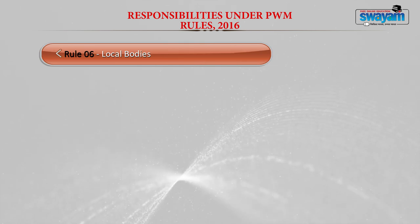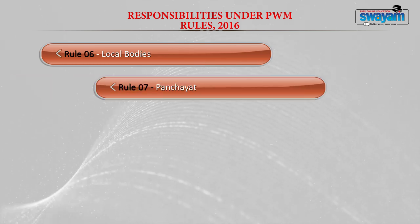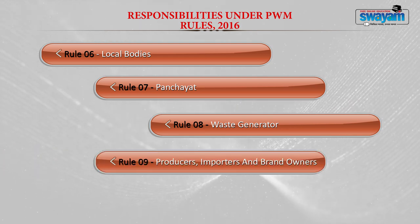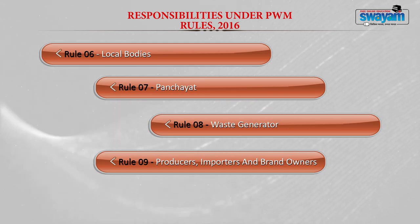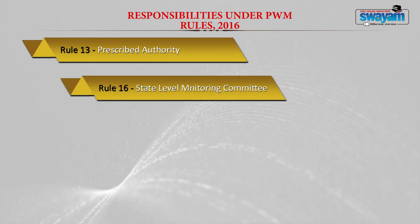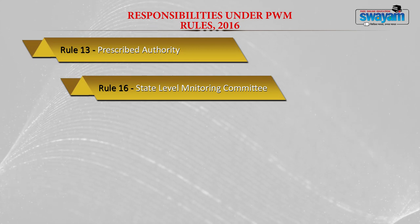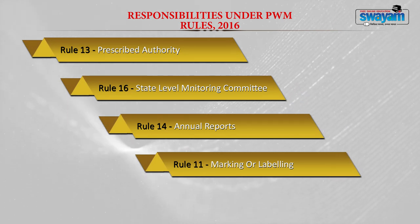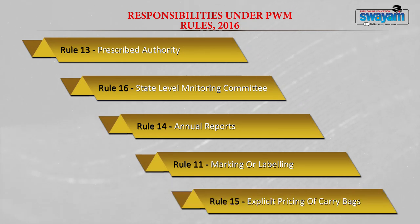The rules assign responsibilities to different bodies. Rule 6 gives the responsibilities of local bodies. Rule 7 gives the responsibilities of gram panchayats. Rule 8 gives responsibilities of waste generators. Rule 9 gives responsibilities of producers, importers and brand owners. Rule 9 also gives responsibilities of retail and street vendors. Rule 13 gives responsibilities of prescribed authorities. Rule 16 establishes the state level monitoring committee. Rule 14 covers annual reports. Rule 11 covers marking or labeling of plastics. Rule 11 and Rule 15 cover explicit pricing of carry bags.